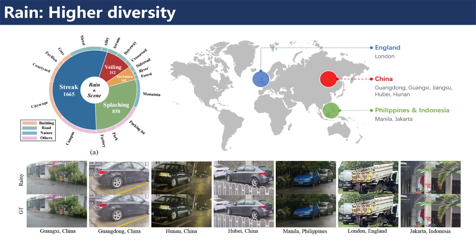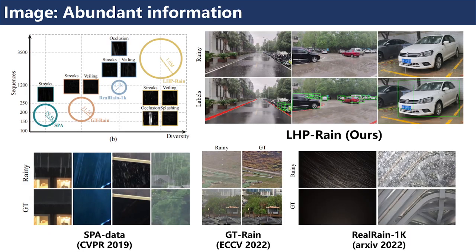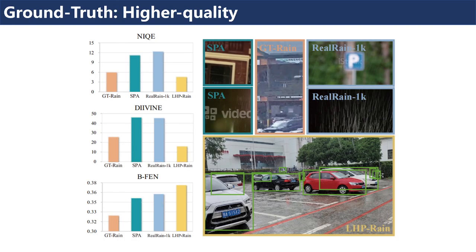Our benchmark has high diversity in rain patterns across eight cities around the world. In terms of imaging, LHP-Rain outperforms former real rain datasets with abundant information, including larger visual fields, more objects, and high image quality. The ground truth of LHP-Rain is also superior to others.